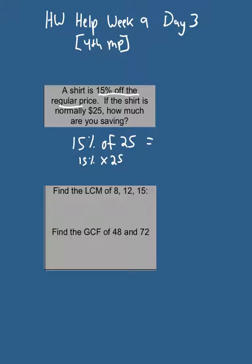Or if you don't have a percent button on your calculator, move your decimal twice to the left and type in 0.15 times 25. And if you do that, you will get 3.75. In other words, you are saving $3.75.